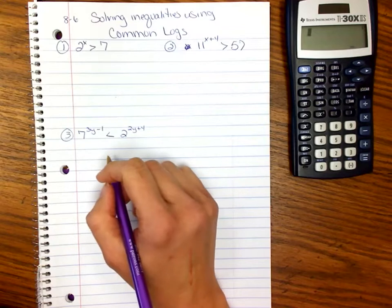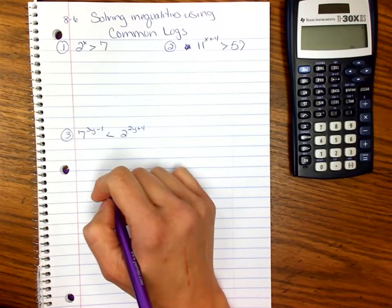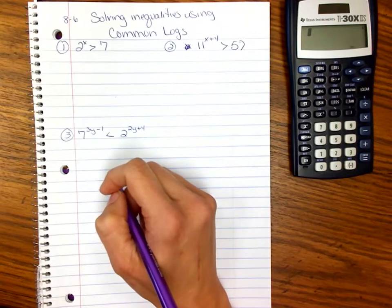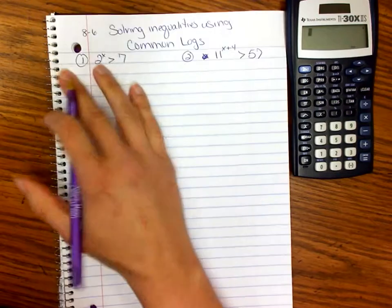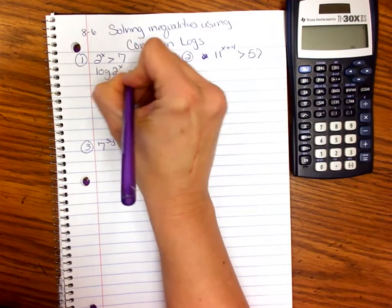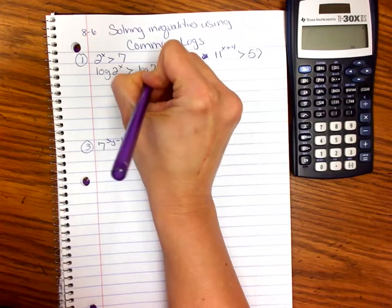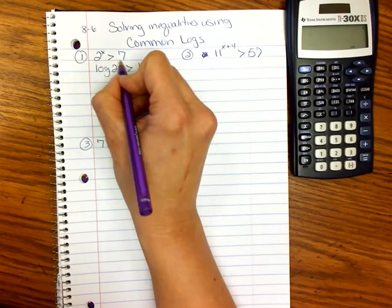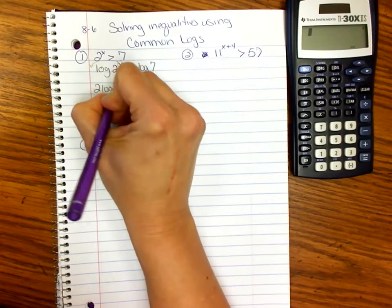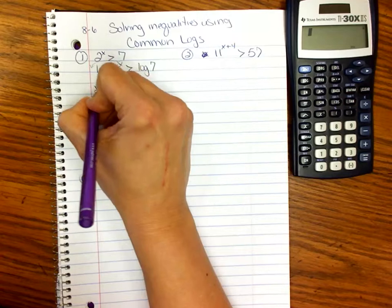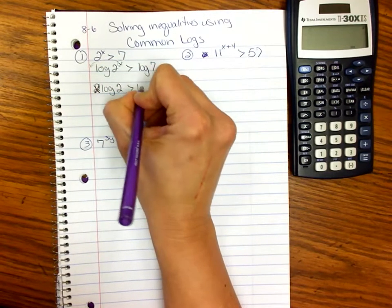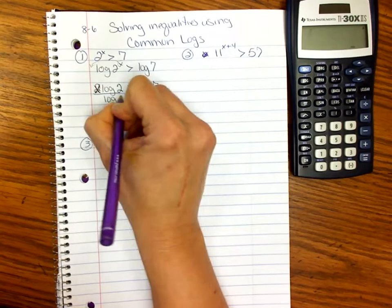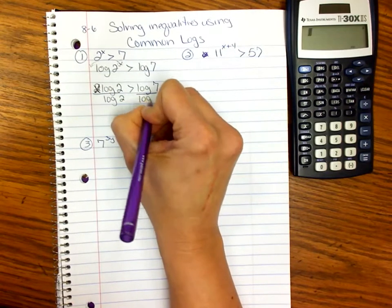We take the log of both sides, similar to solving linear equations where you add, subtract, multiply, or divide both sides. So log(2^x) > log(7). Using our properties, when we have an exponent, we can move it down in front: x·log(2) > log(7). To get x alone, we divide by whatever is being multiplied by it, so we divide by log(2).